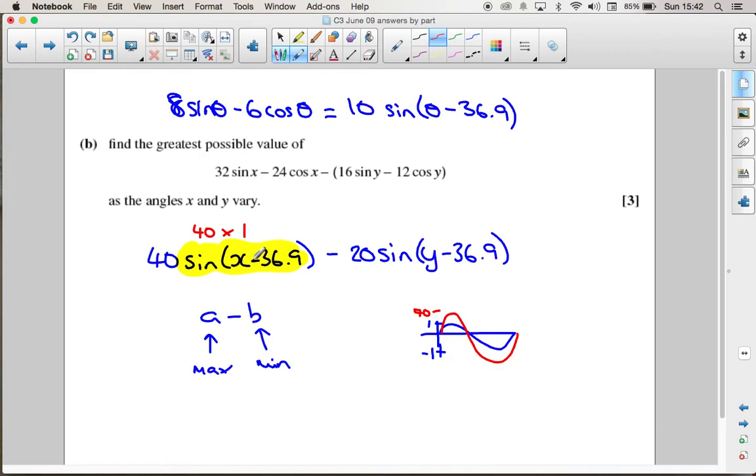It doesn't matter that I've got this x - 36.9, because that will just be 1 at a particular value of x. We're not asked for what the value of x is; we just want to know the y-value, we just want to know the value that the function can be. So we don't really need to pay any attention at all to what's in this bracket here.